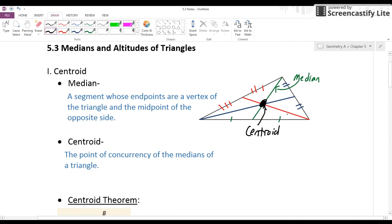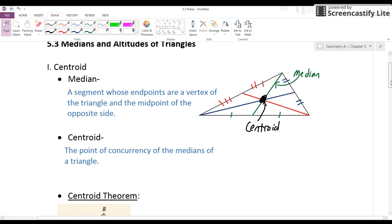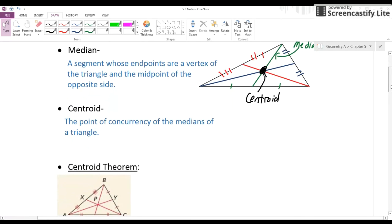So now that we know what a centroid is, there's an important thing to note here because it does show up in some word problems. The centroid is also what we call the center of gravity of the triangle. So it's the point where a triangle would actually balance. Let's write that note down.